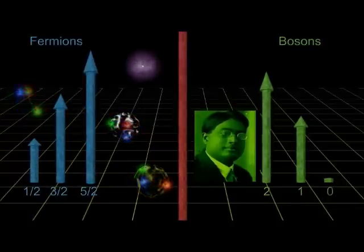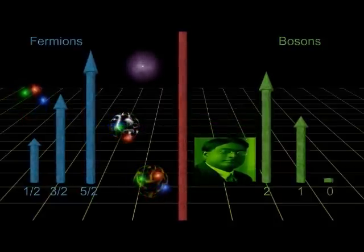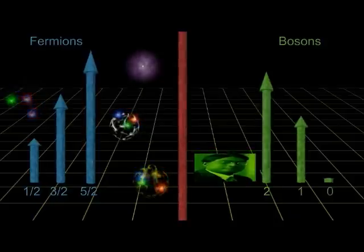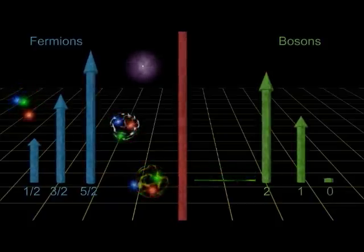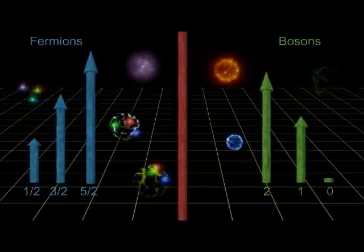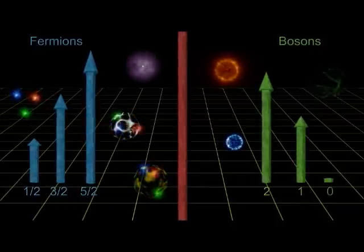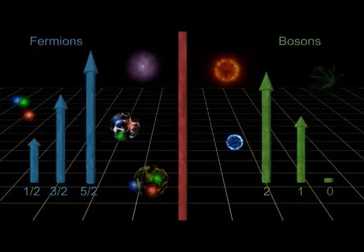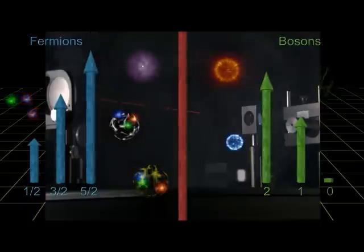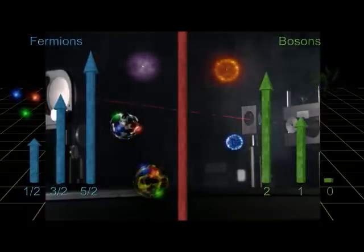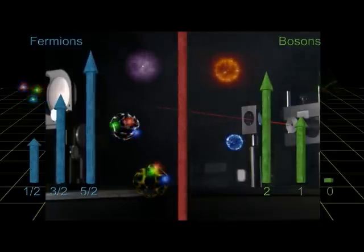Unlike fermions, which must obey the Pauli Exclusion Principle, bosons do not. Groups of multiple bosons will all gather in the lowest available energy state. Photons, gluons, gravitons, all fall into this family. If bosons had to obey the exclusion principle, many modern marvels could not exist. Like lasers, which require that huge numbers of photons be in the same state at the same time. And again, the universe would be a very different place.